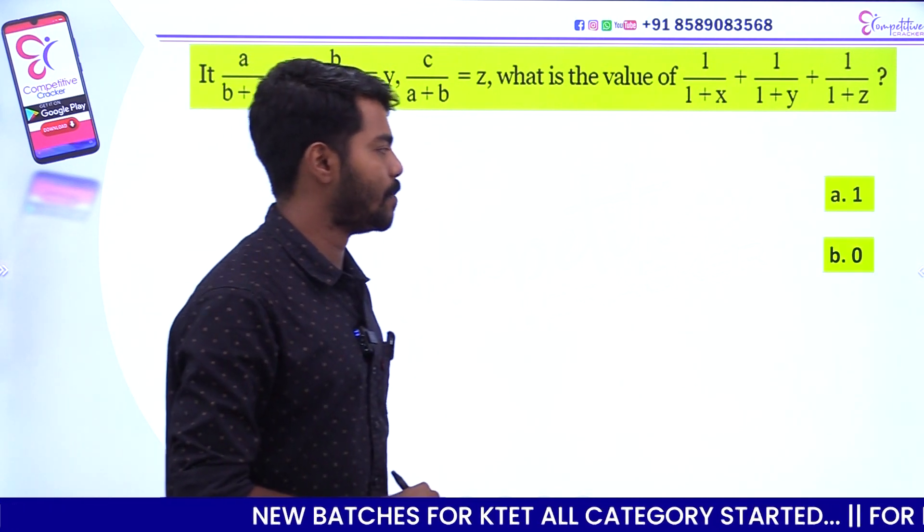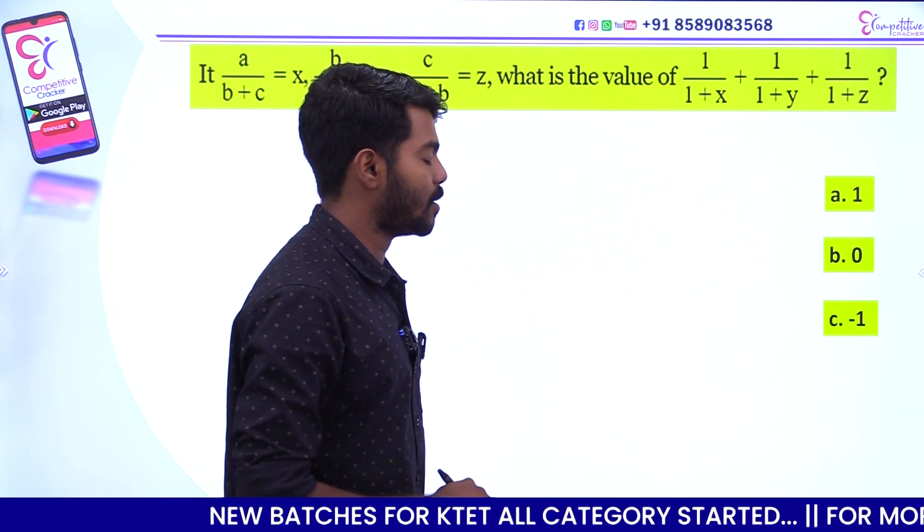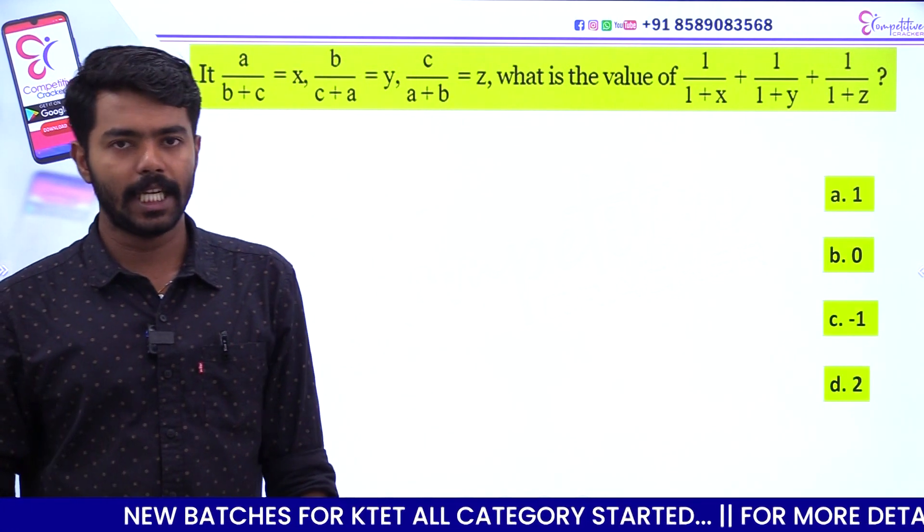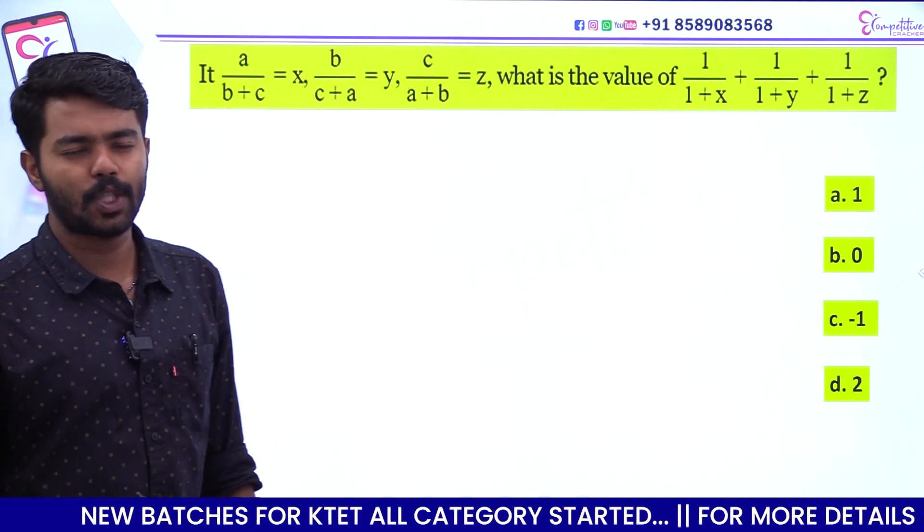Option A: 1, option B: 0, option C: minus 1, option D: 2.